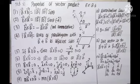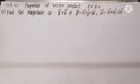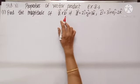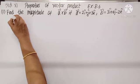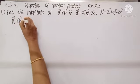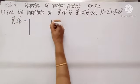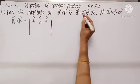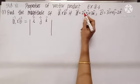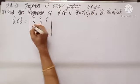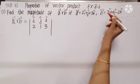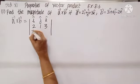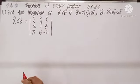Exercise 8.4, Question 1: Find the magnitude of A cross B if A and B are given. Let us find A cross B using the determinant. First row: I, J, K. Second row, A vector components: 2, 1, 3. Third row, B vector components: 3, 5, minus 2.